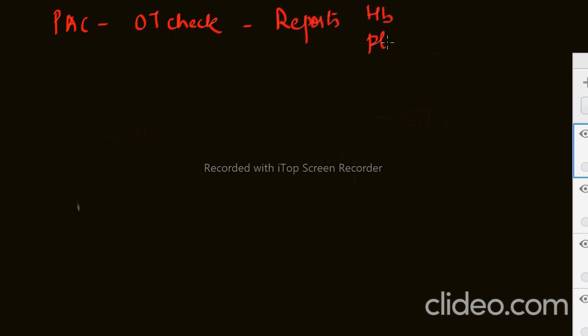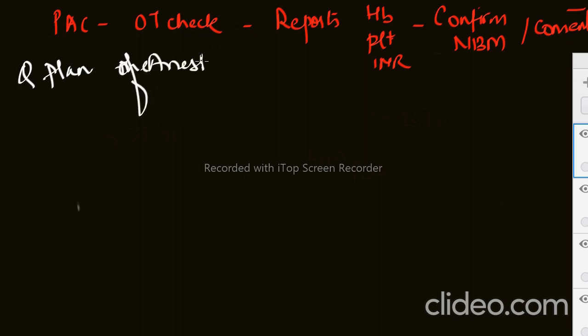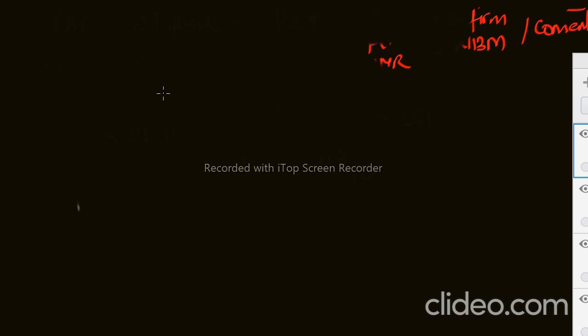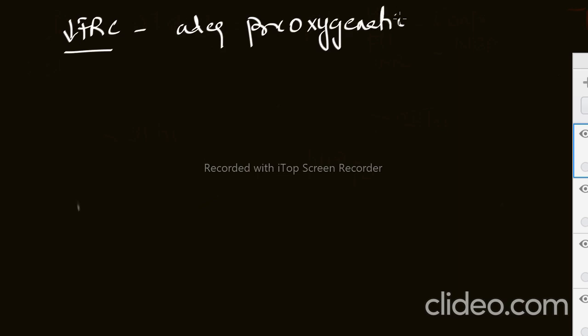In which you have checked hemoglobin, platelets, INR, everything. You have confirmed the identity and NBM status of the patient and taken the consent. After these things, the next question will be about the plan of anesthesia - how will you induce the patient and how will you extubate the patient? We all know that the pediatric age group has low FRC, so we have to keep in mind adequate pre-oxygenation to get adequate reserve because this can be a difficult intubation.